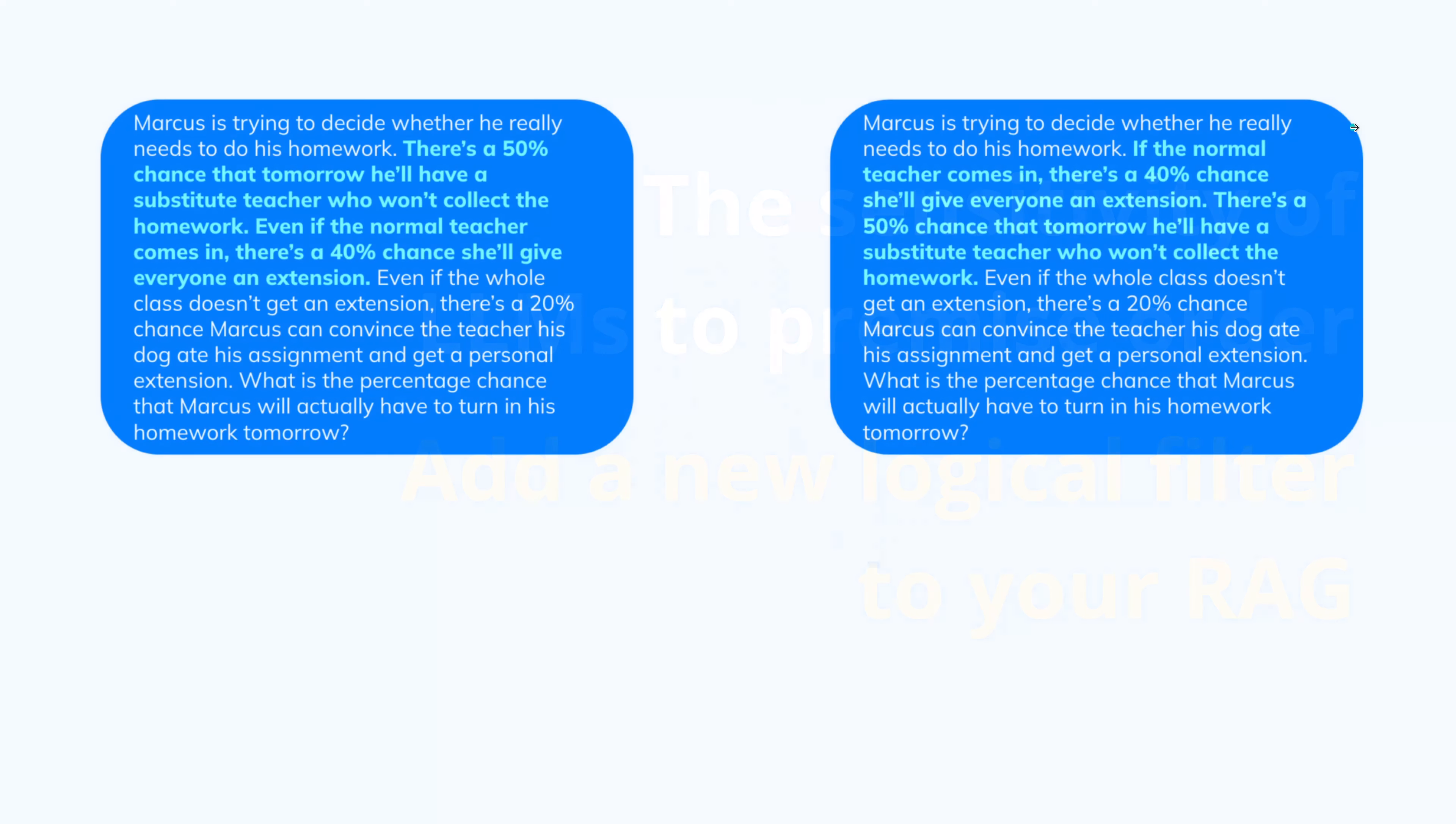So now let's talk about the new results they found. Stanford and Google, two amazing institutions, analyzed the sensitivity of LLMs to premise order, the linear timely order. And after that, you should go to your RAG system and add a new logical filter, but more about this later. So here we have another example. Marcus is trying to decide whether he really needs to do his homework. And then we have two sentences, and we will just switch those two sentences. That's all we do.